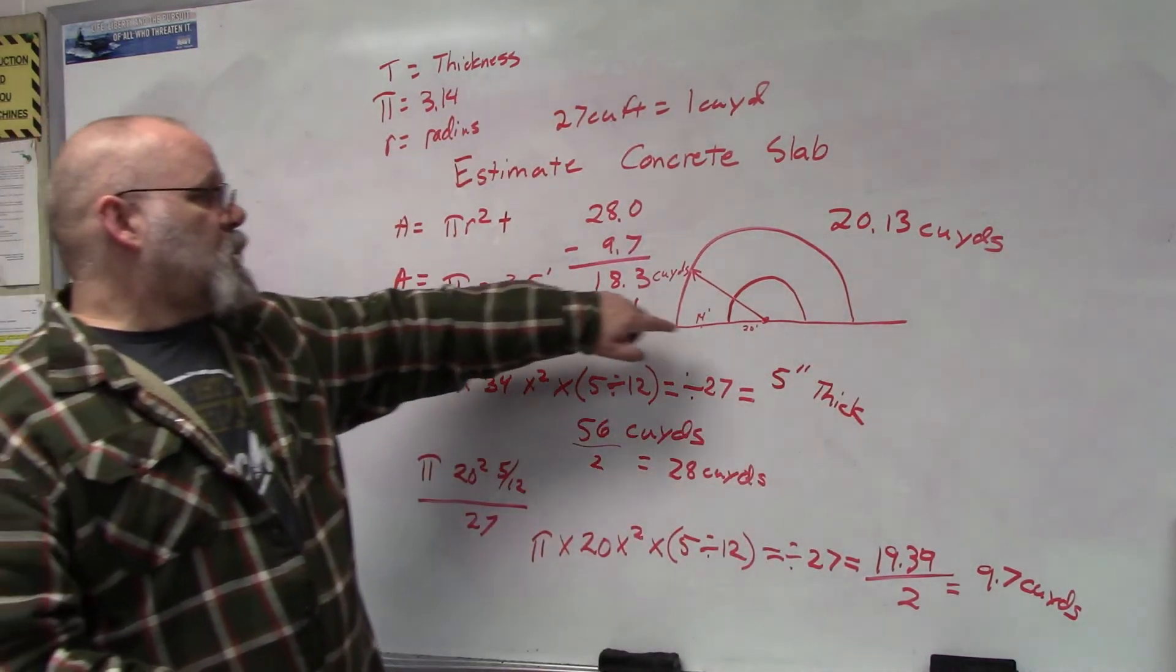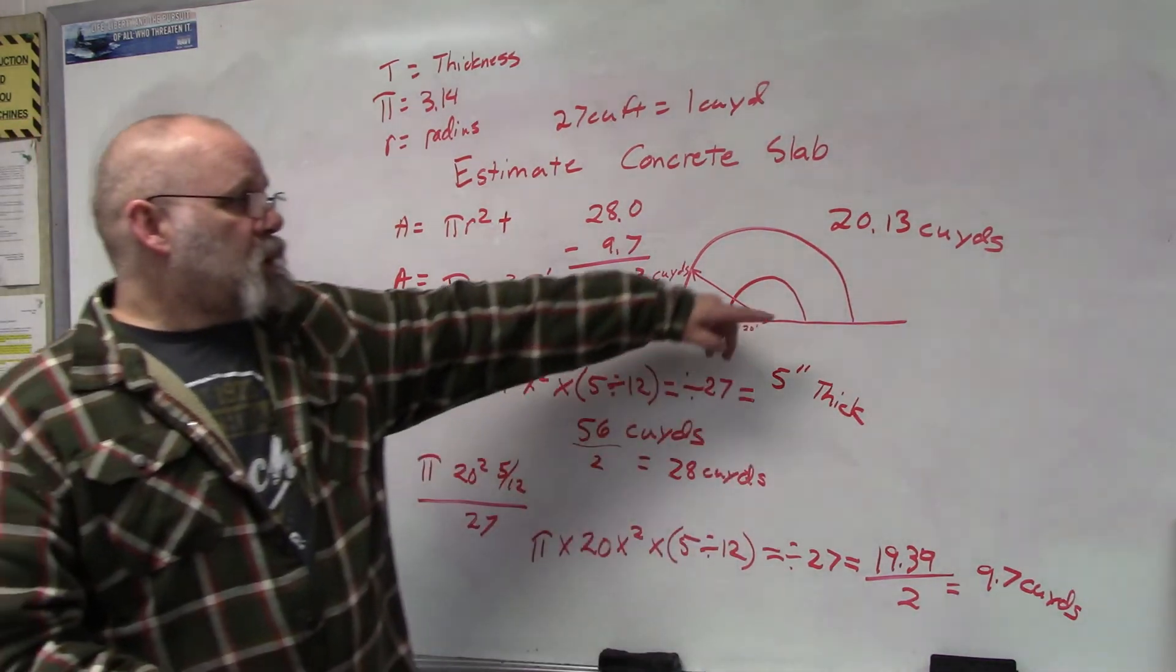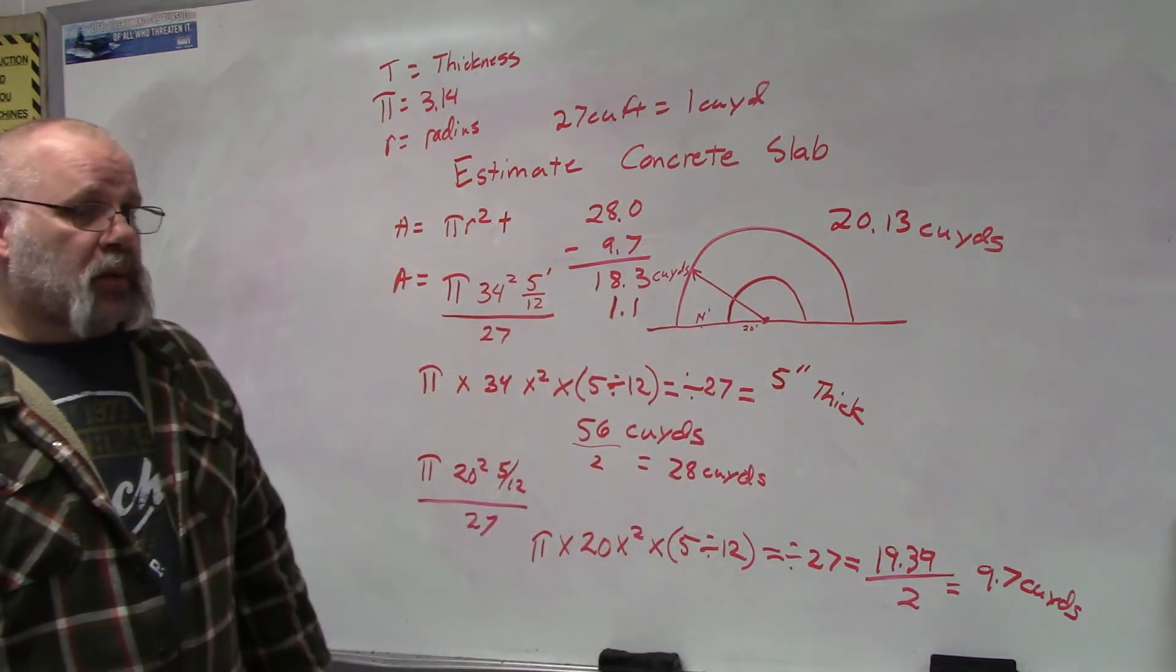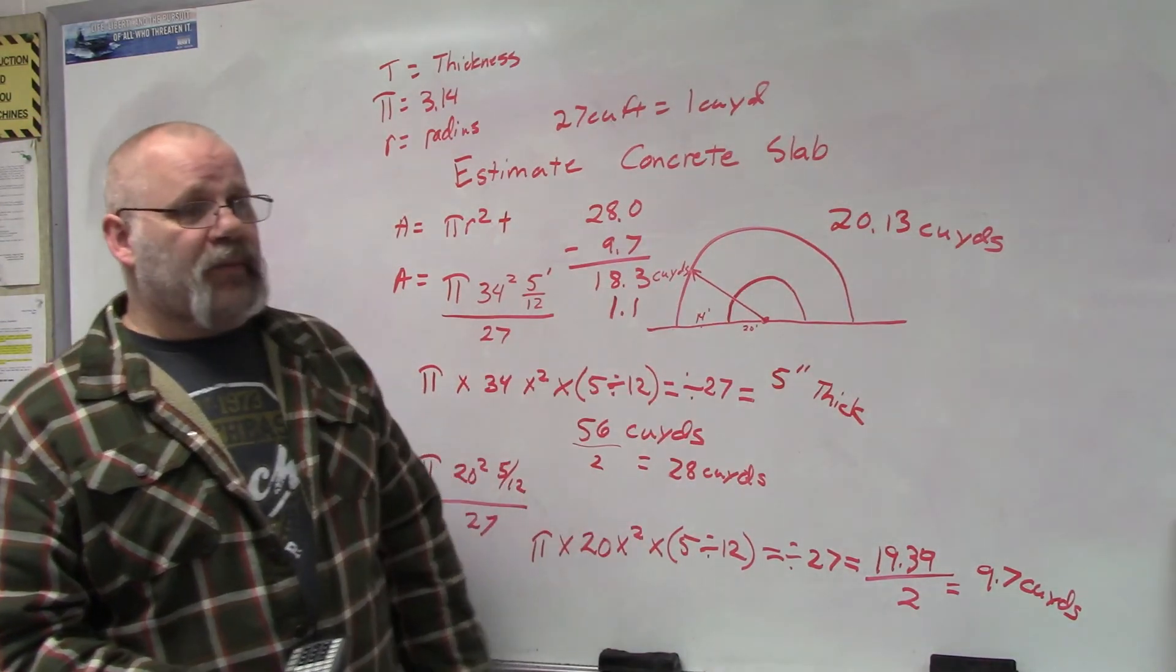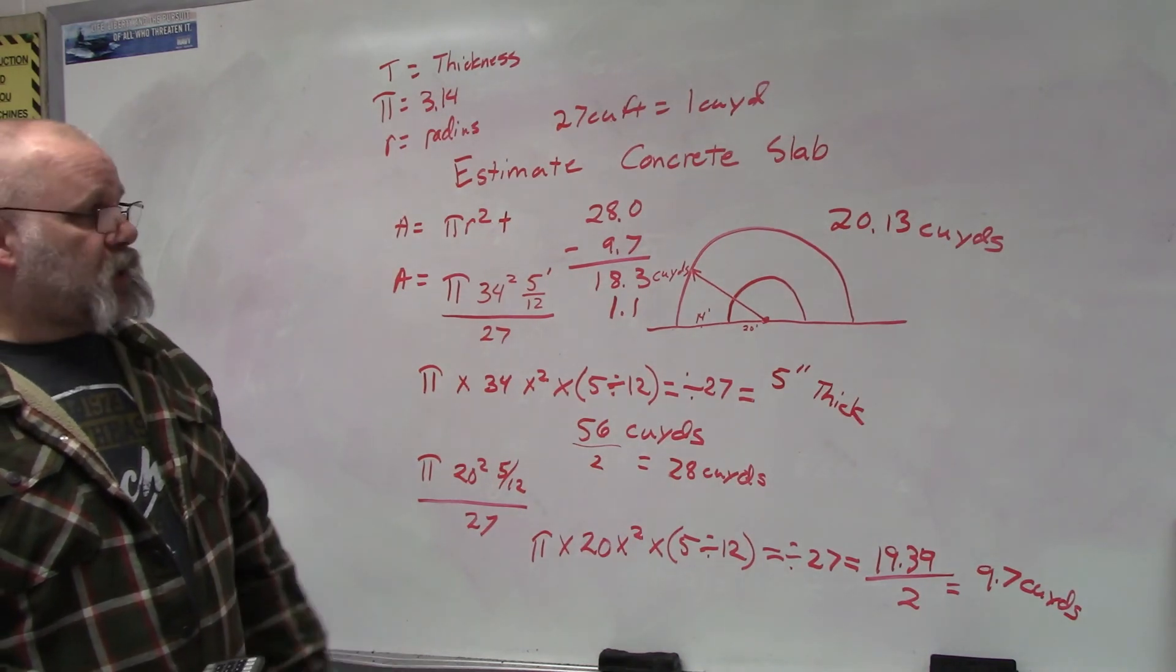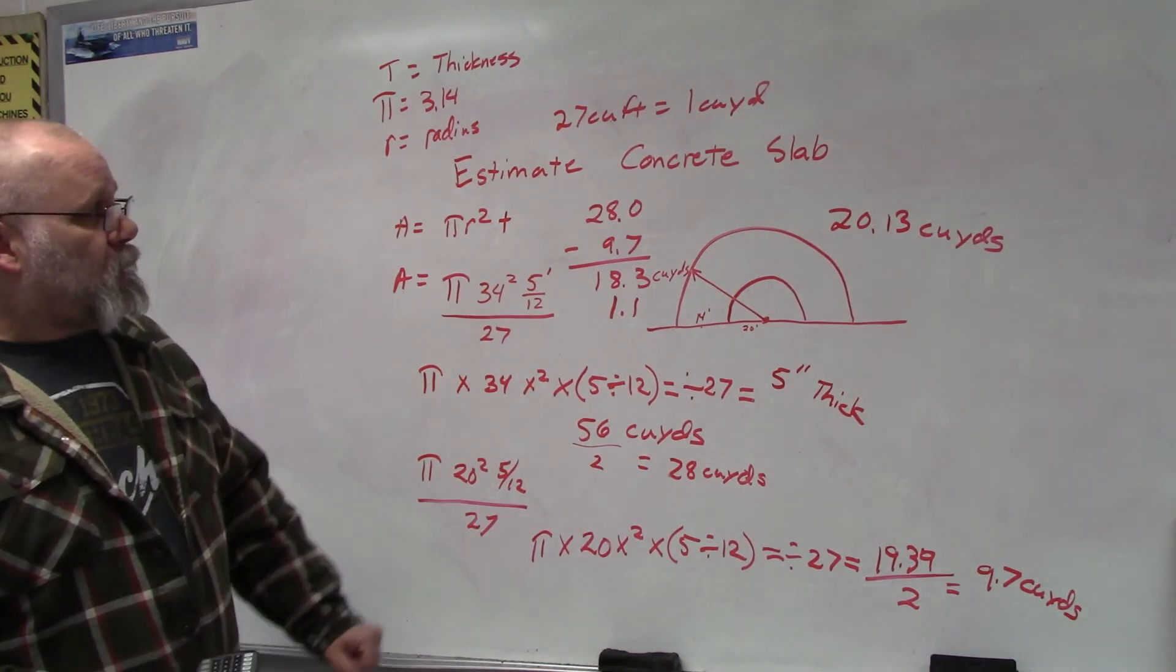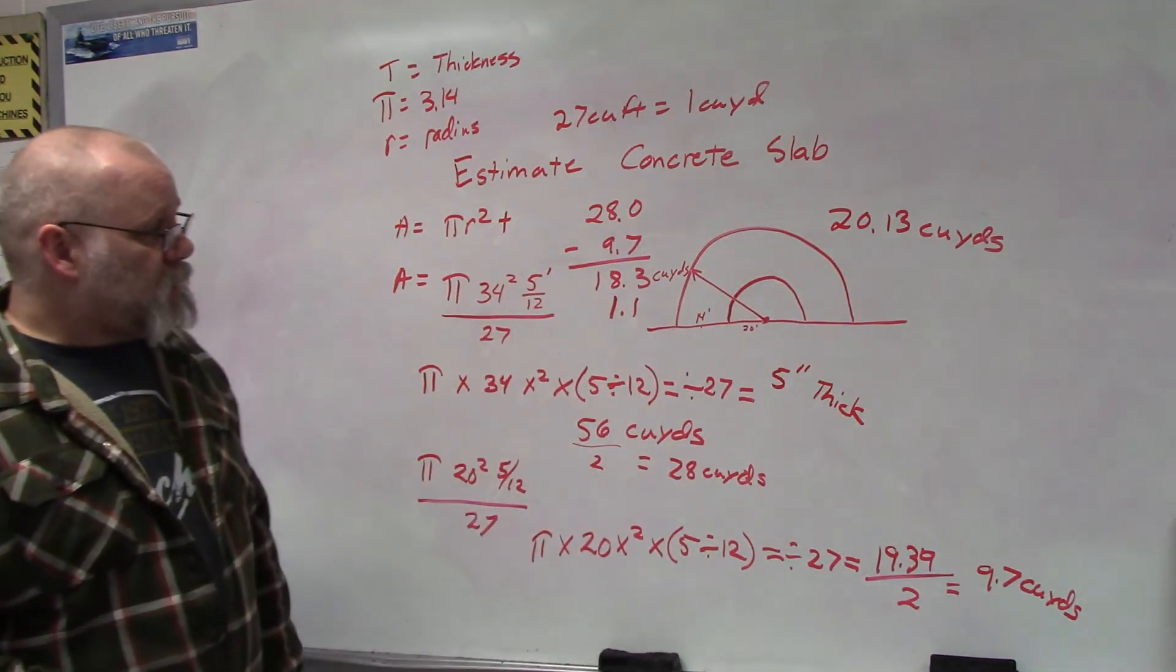If you didn't think you're going to waste a lot, you could round that down to 20. If you thought you're going to waste more, you could round it up. If your concrete company says they can do half yards, maybe go up to 20 and a half, or maybe you have to go up to 21. But it would take 20.13 cubic yards of concrete to pour that driveway.